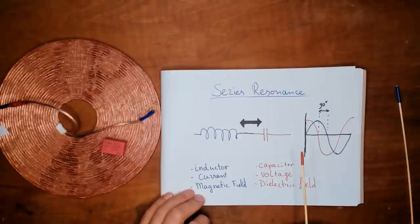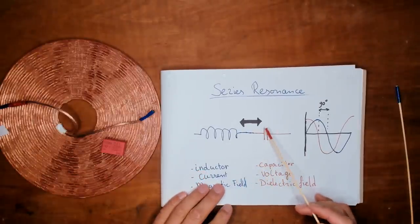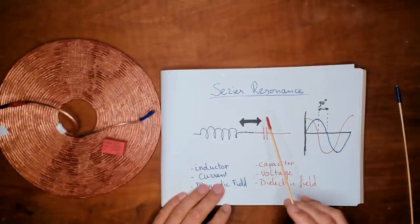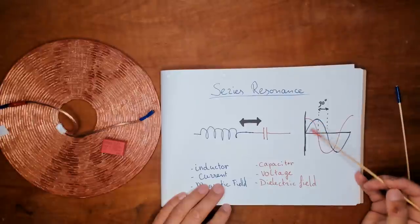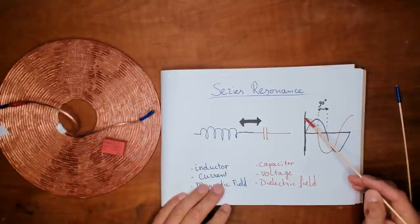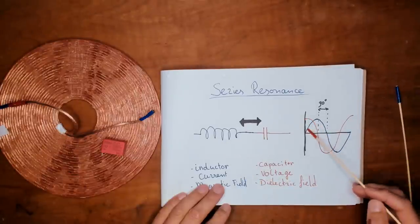Now with series resonance, the electric energy is going back and forth between the magnetic field and the dielectric field. And I wrote them here in this graph against the time. Red is the voltage and blue is the current.